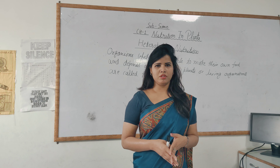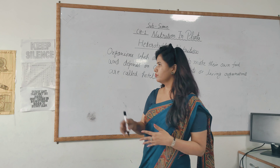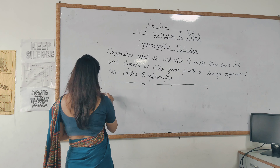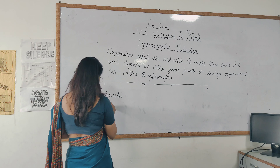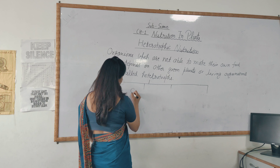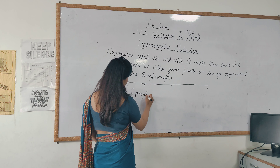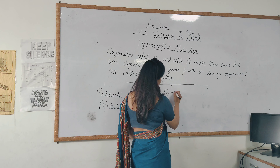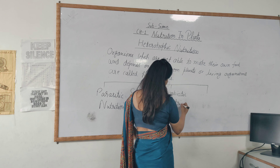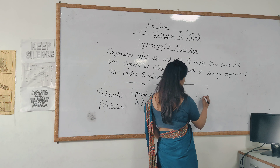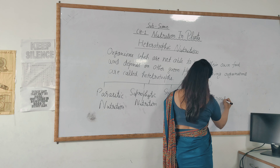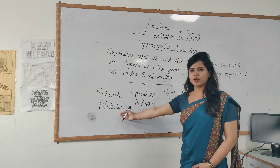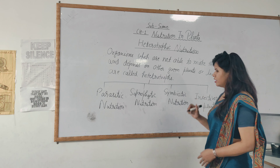Heterotrophic Nutrition is of 4 types. Let us discuss them one by one. The four types are: first, Parasitic Nutrition; second, Saprophytic Nutrition; third, Symbiotic Nutrition; and fourth, Insectivorous Plants.